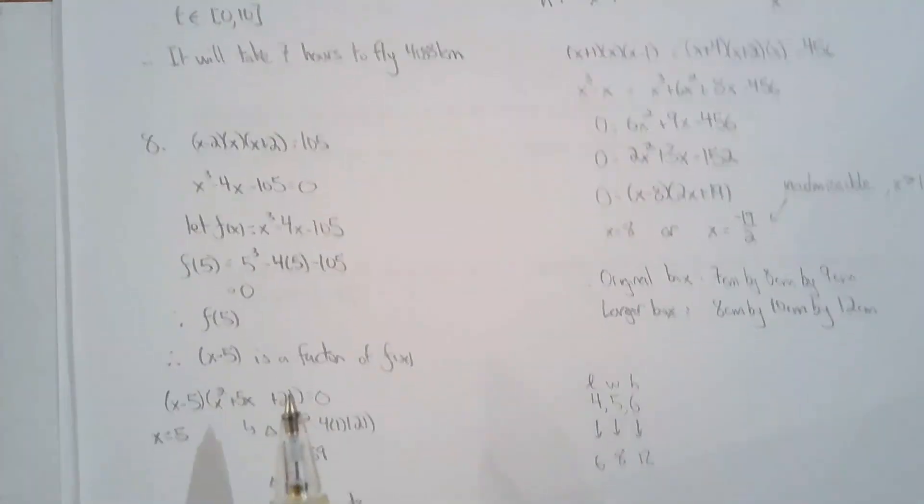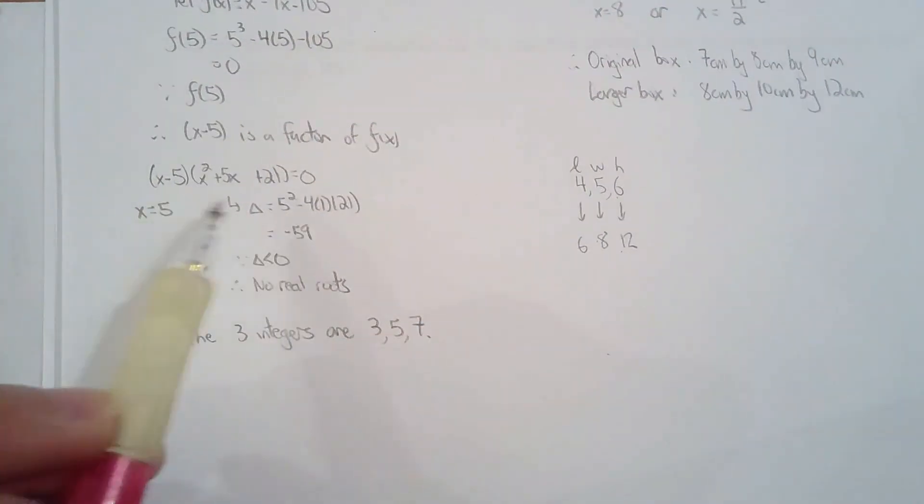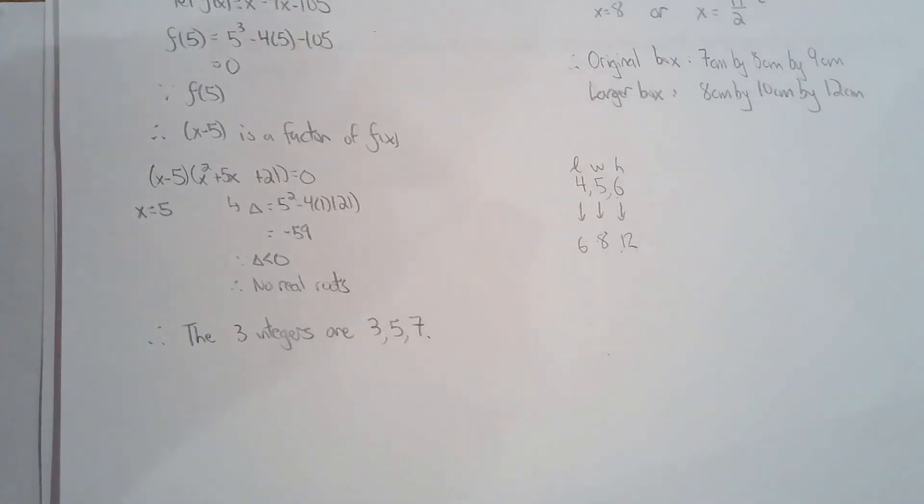I factor using factor theorem. And then I notice that this quadratic factor won't give me any real roots. So the middle of the three consecutive odd integers is 5, which means the three integers are 3, 5, and 7. Hopefully you're able to generate the models. And the factoring and solving part is very straightforward. And like I said earlier.